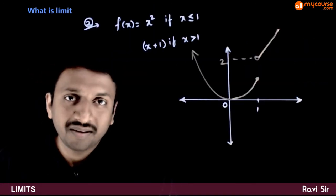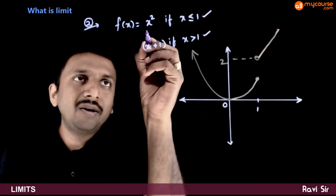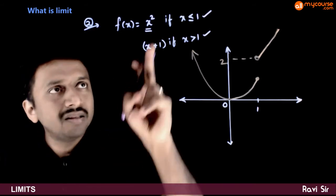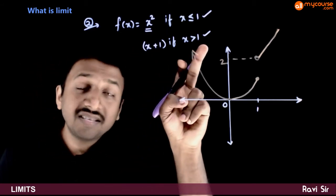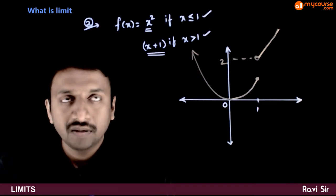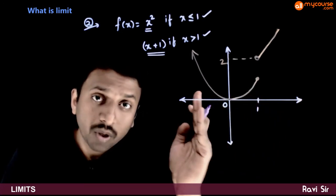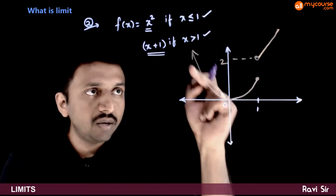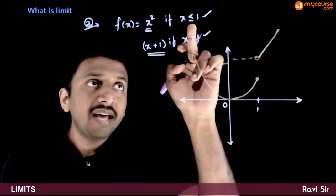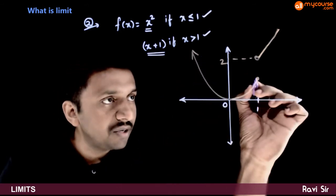Let us take another example — a piecewise defined function. f(x) equals x square if x is less than or equal to 1, and f(x) equals x plus 1 if x is greater than 1. If I try to draw the graph of this function, just till x is less than or equal to 1, the graph is the parabolic graph of y equal to x square. At x equal to 1, this is valid and I represent it using a solid dot.